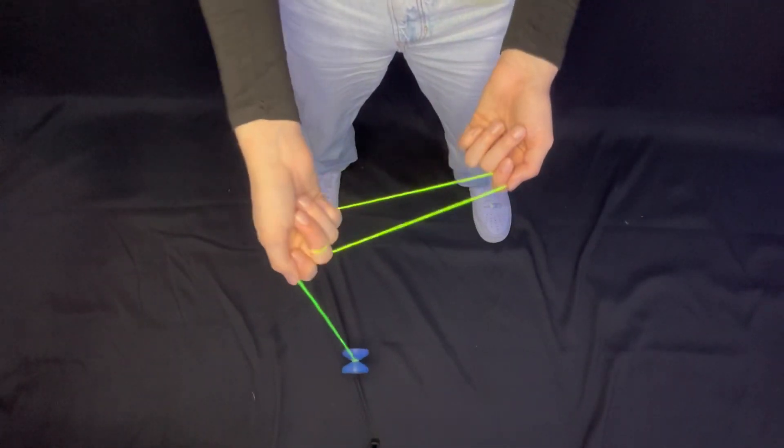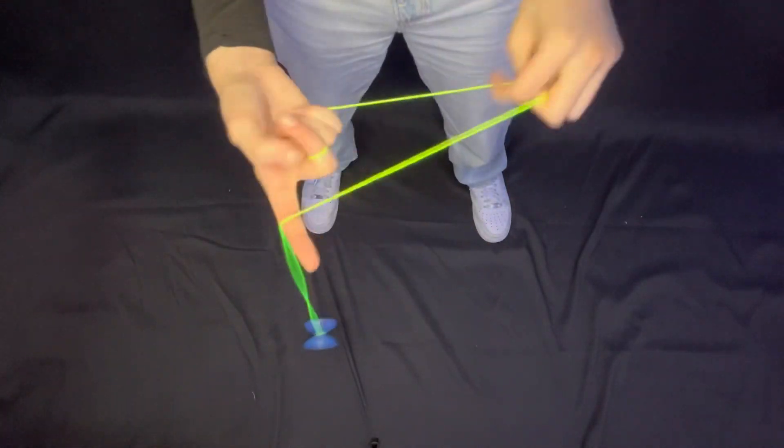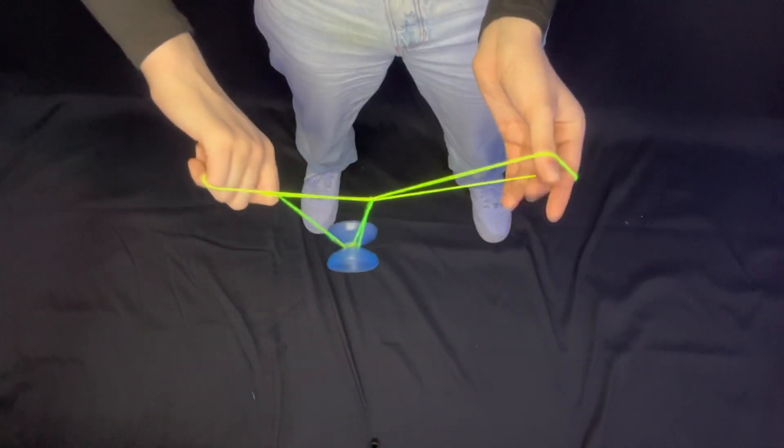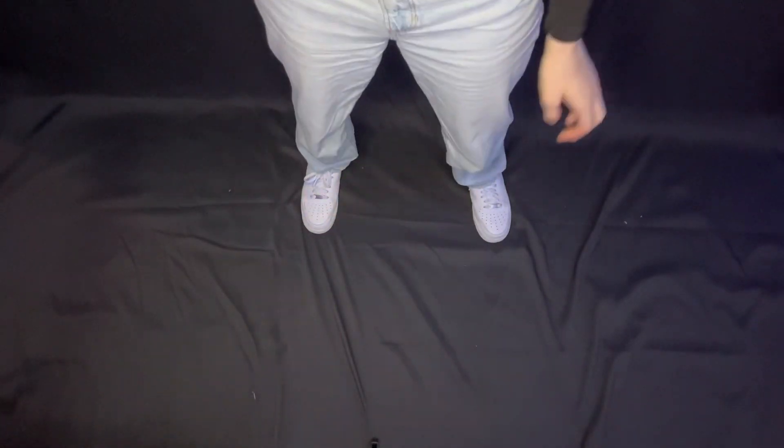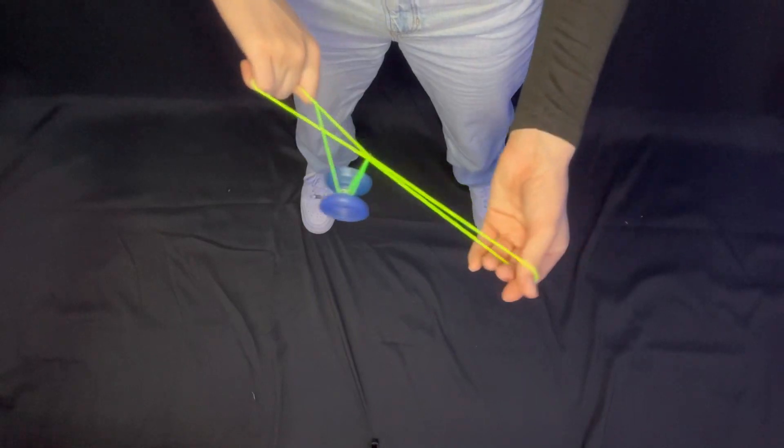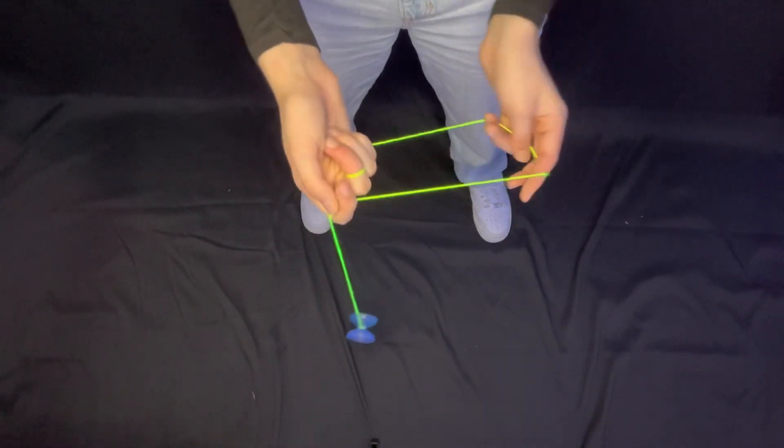So you see how the string comes around. Oh wow. As I missed, you can see that the string comes around and lands in the gap of the yoyo, just like that. You can definitely practice just doing one and seeing if you can land it like that, just so that you can get the feeling of it.